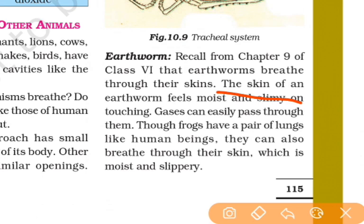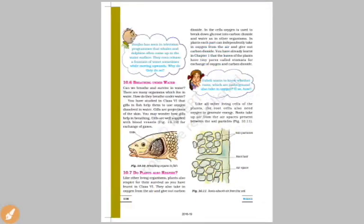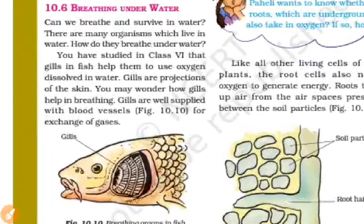Some organisms breathe through their skin. For example, frogs have lungs as well as skin for breathing. Earthworms breathe through their moist skin.